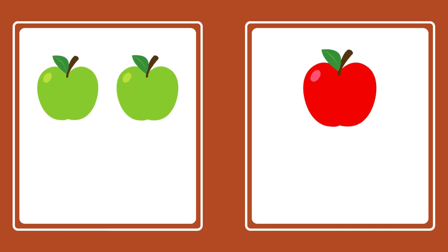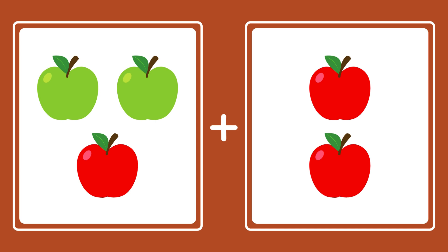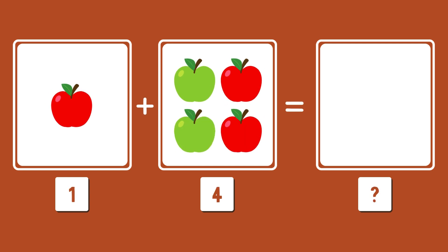Now I have three apples and two apples. How many apples do I have? I have got five apples. Good job. Now I have got one apple and four more apples. How many apples do I have? The right answer is five apples. Good job, kids.